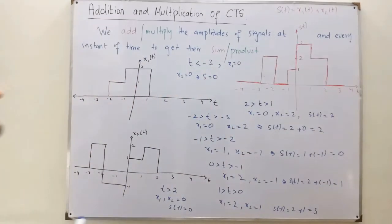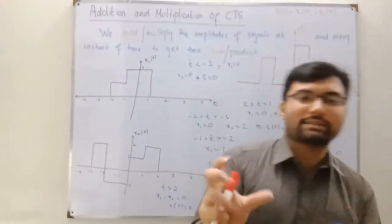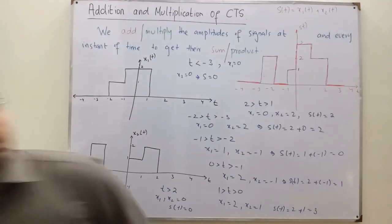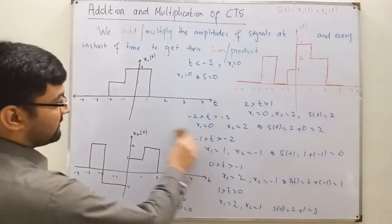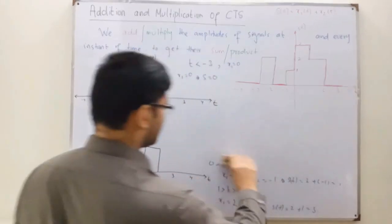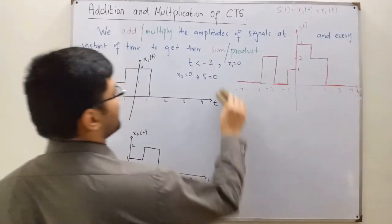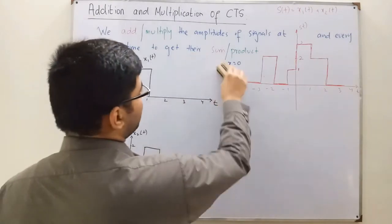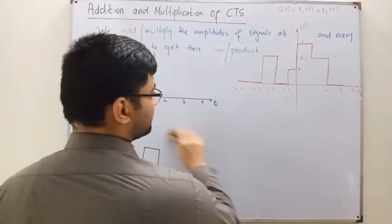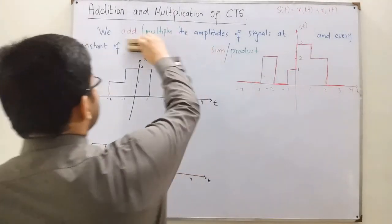So that is about their sum — I hope this is clear. You do it at each and every instant; you take intervals and compute respectively. Now for the product — I will do the product as well. Subtraction and division I don't think need a separate video, so you can see those yourself.